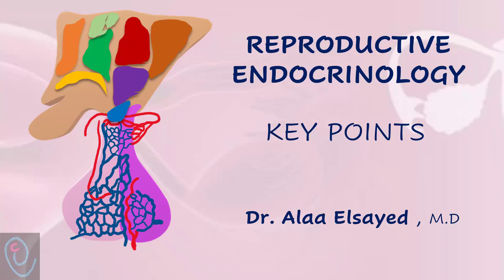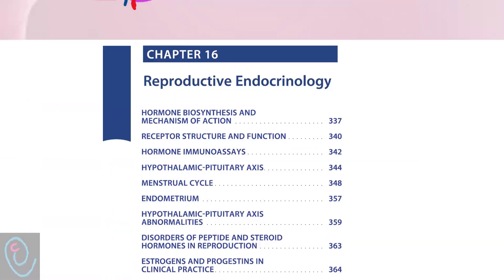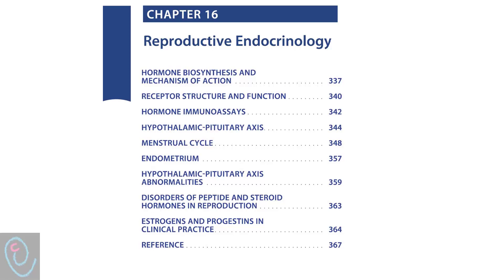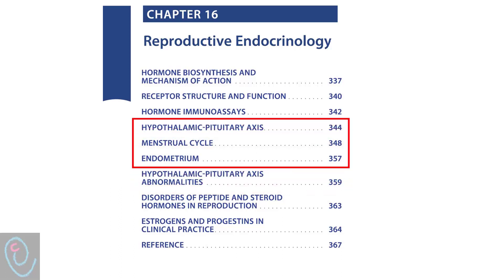Reproductive endocrinology key points. This video will summarize part of Chapter 16 from Williams Gynecology, which includes the hypothalamic-pituitary axis, menstrual cycle, and endometrium.